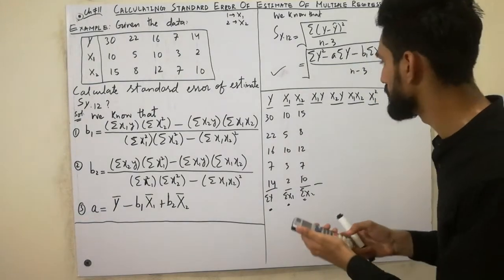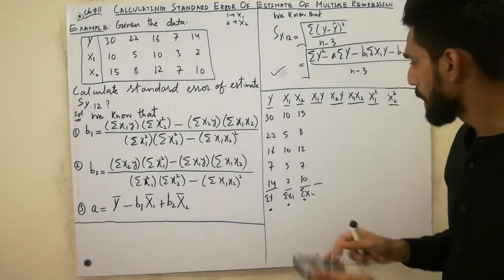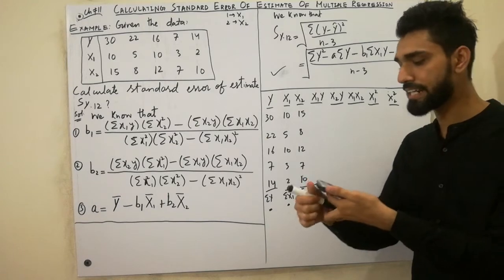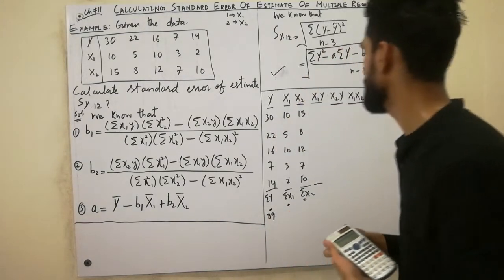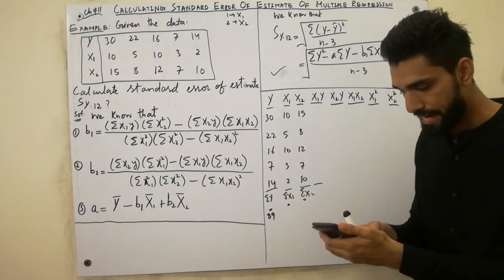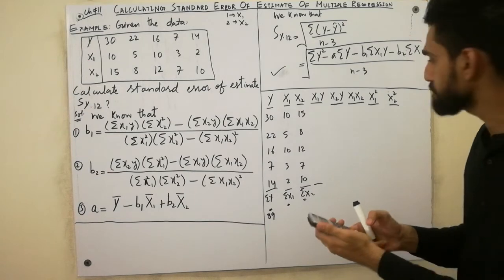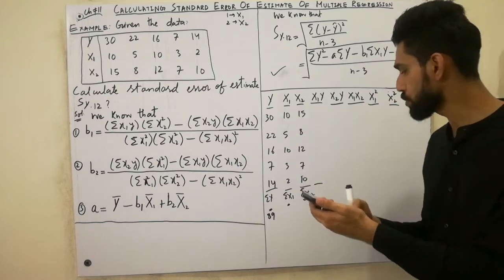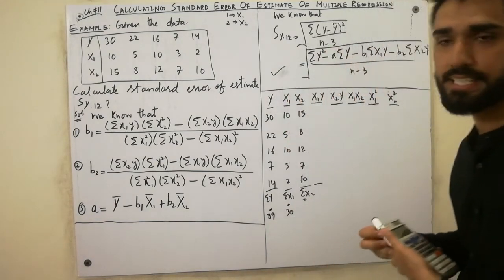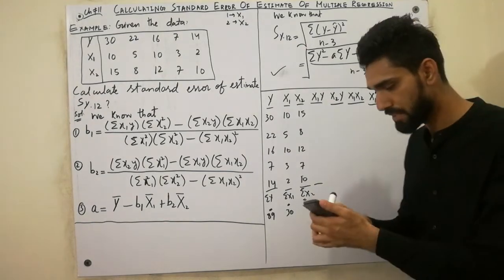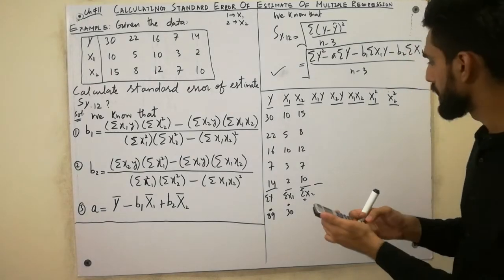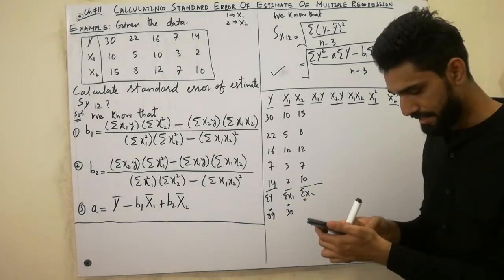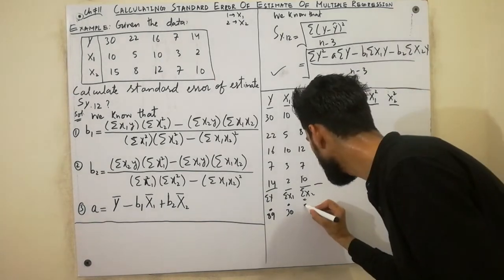30 plus 22 plus 16 plus 7 plus 14 — we get 89. So summation y is 89. Next we calculate summation x1: 10 plus 5 plus 10 plus 3 plus 2, we get 30. So summation x1 is 30. Next we add up x2: 15 plus 8 plus 12 plus 7 plus 10, we get 52. So summation x2 is 52.